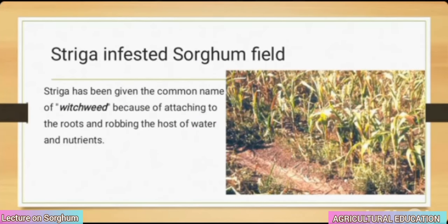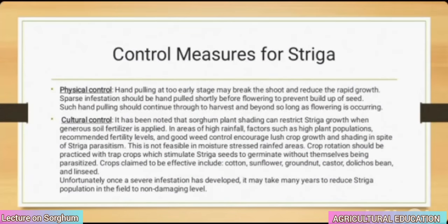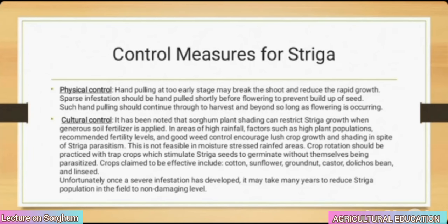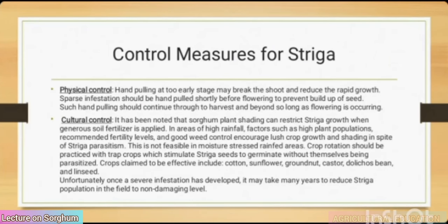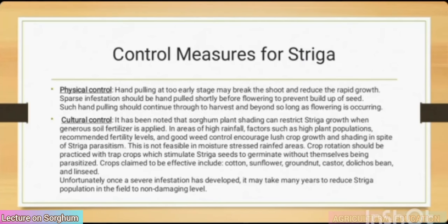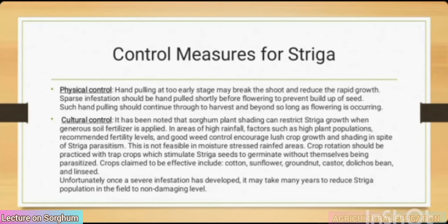Striga has been given the common name 'witchweed' because of its habit of attaching to roots and robbing the host of water and nutrients. Control measures — physical control: hand-pulling at early stages may reduce rapid growth. Past infestations should be hand-pulled shortly before flowering to prevent buildup of seed, and this should continue through to harvest. Cultural control: sorghum plant shading can restrict Striga growth when generous soil fertilizer is applied. In areas of high rainfall, high plant populations, recommended fertility levels and good weed control encourage lush crop growth and shading despite Striga parasitism.